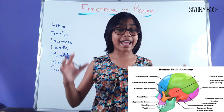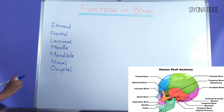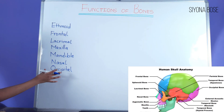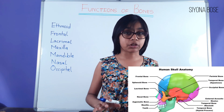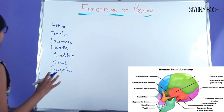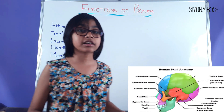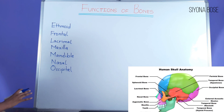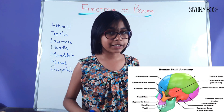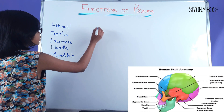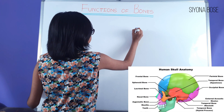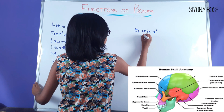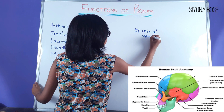Then we have the occipital, present at the back of the skull — it's just one bone. Between the occipital and the frontal, which makes up the cranium. This occipital is part of the cranium. Between the frontal and occipital there is an epicranial aponeurosis, which is a flat tendon — just an extra note.